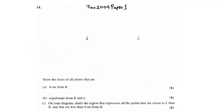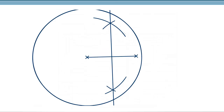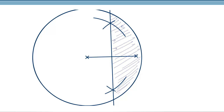On your diagram, shade the region that represents all the points that are closer to L than K and less than 4 cm from K. For shading, we have two things to keep in mind: less than 4 cm from K and closer to L than K. Closer to L means this side of the locus — on the right side. Less than 4 cm means inside the circle. So the shading should be closer to L and less than 4 cm.